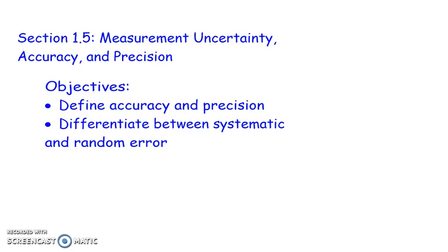In this section we're going to be looking at measurement uncertainty, accuracy, and precision. By the end of this video, you should be able to define accuracy and precision and differentiate between systematic and random errors.